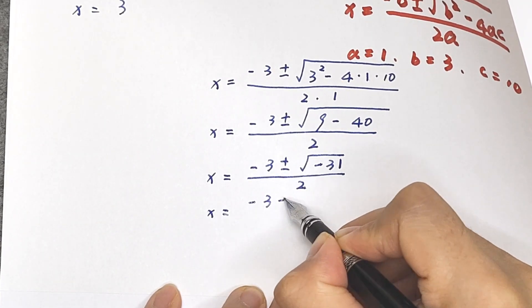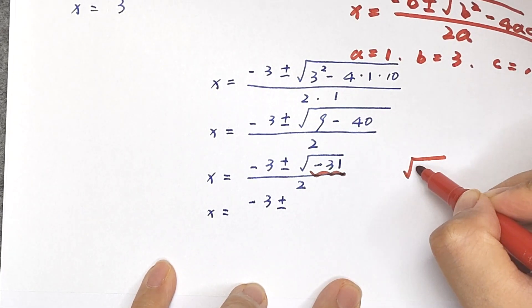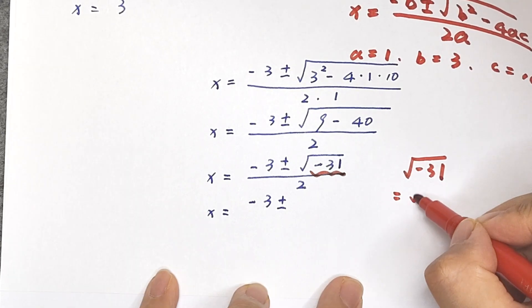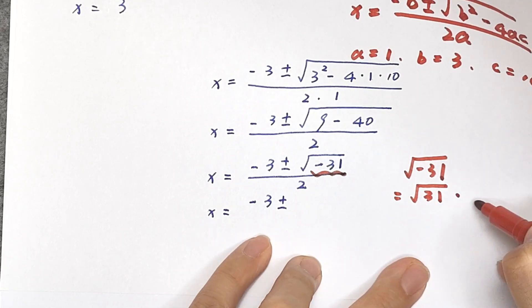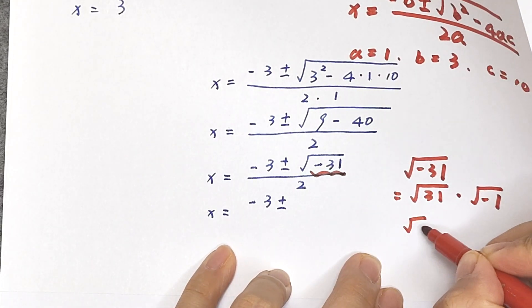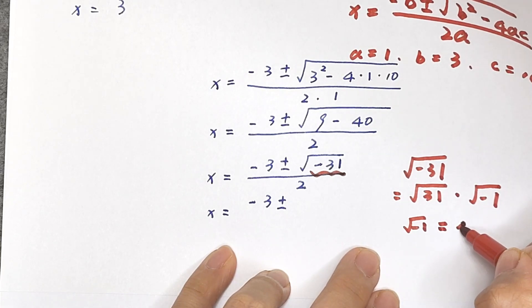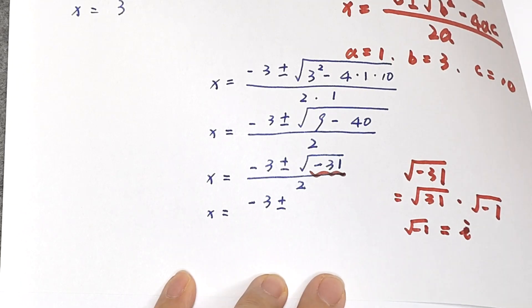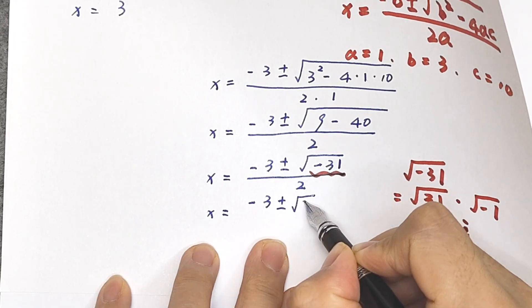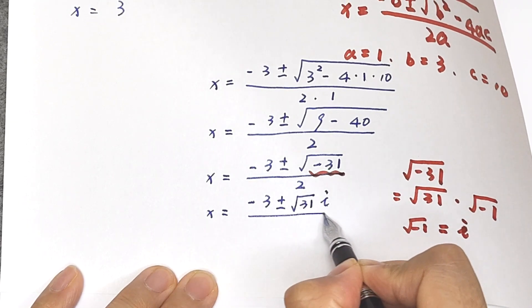Since the discriminant is negative, the square root gives an imaginary result: negative 3 plus or minus square root of 31 times i, over 2.